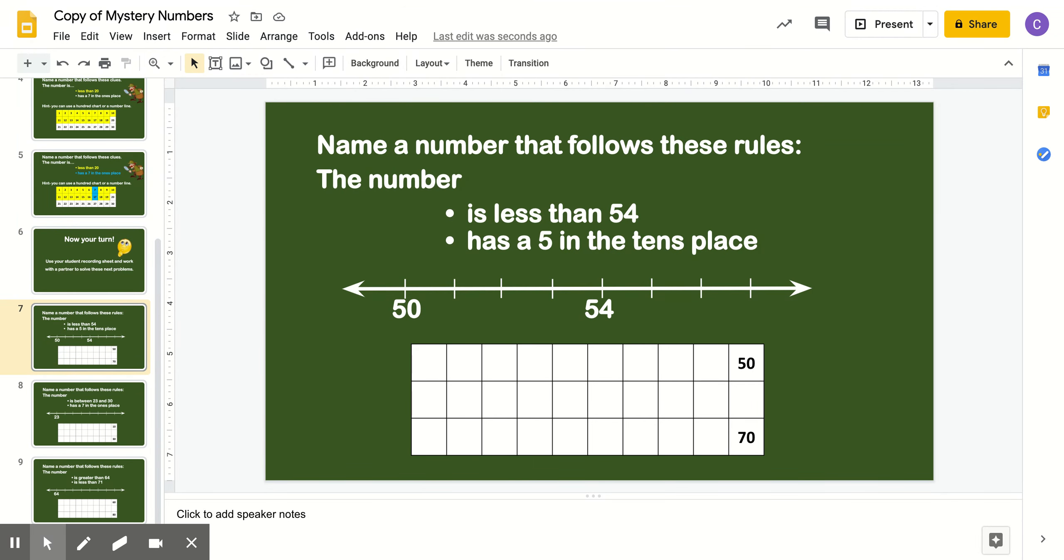It says, name a number that follows these rules. The number is less than 54 and has a 5 in the tens place. Hmm. So it's less than 54. Let me grab my pen. So if it's less than 54, do we go that way on a number line, or do we go that way?